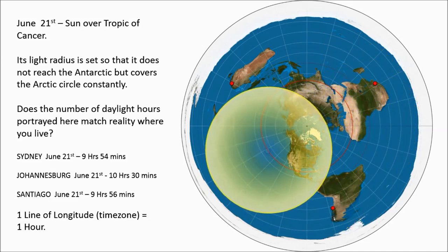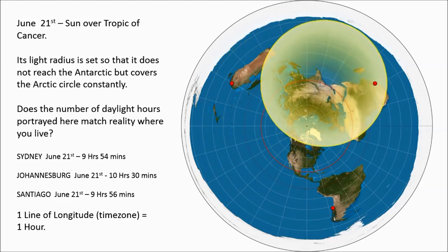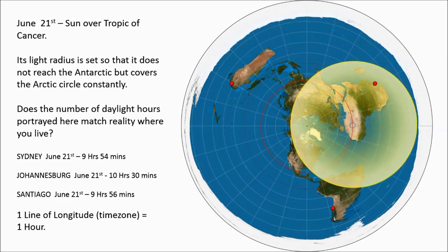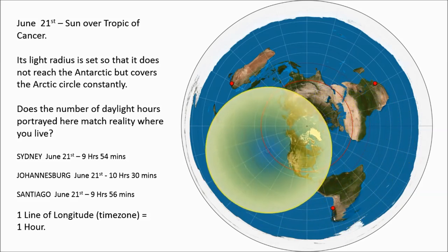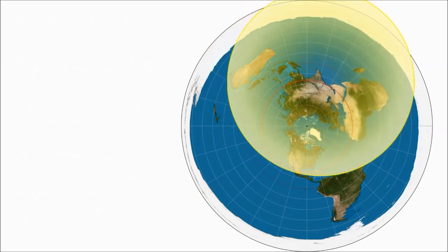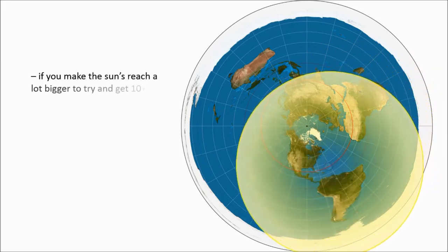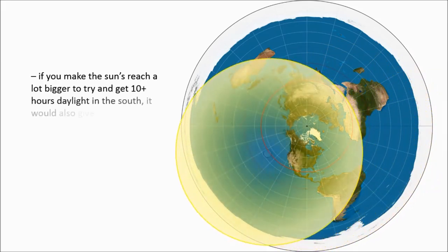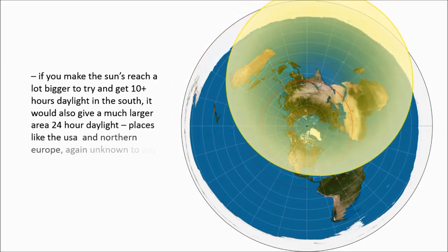A model must match reality. It's a basic fail of the Gleeson's disc model. And it's common sense, commonly known, the number of daylight hours can't be faked. So you could set the sun's reach so it's now a lot bigger. Now it will give 10 hours of daylight to those places where they actually receive it.